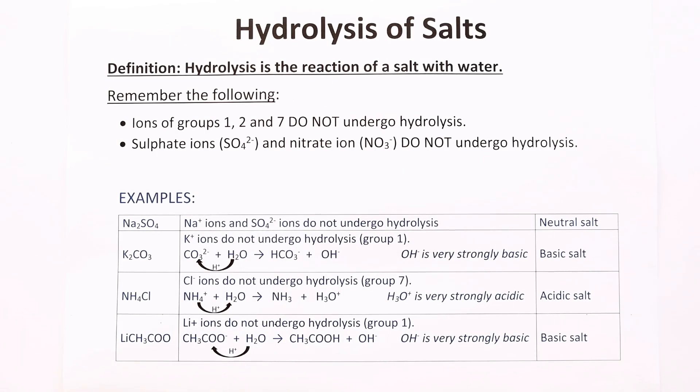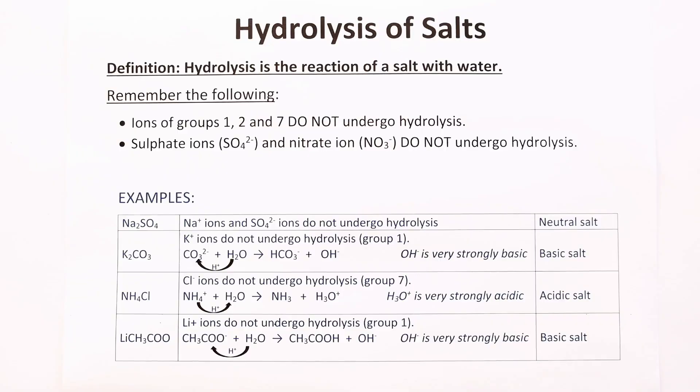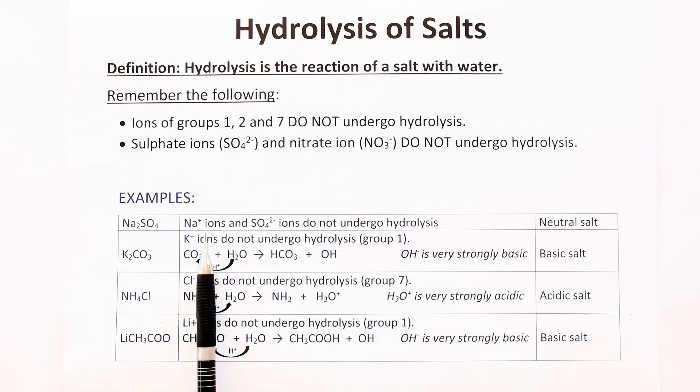Now we're going to look at four examples and apply these two rules. The first example is sodium sulfate. Sodium ions are from group 1, so they do not undergo hydrolysis. Sulfate ions also do not undergo hydrolysis. Therefore, sodium sulfate is a neutral salt.